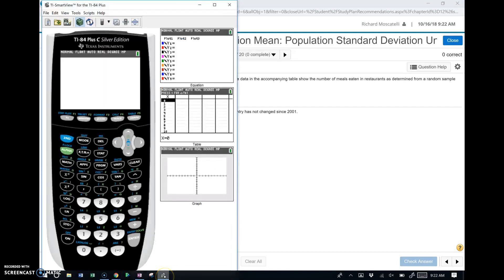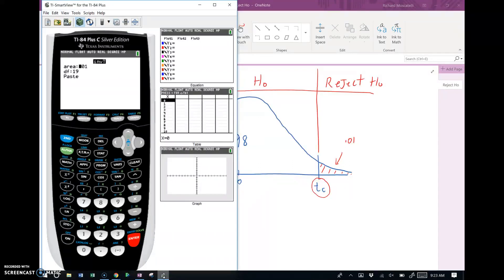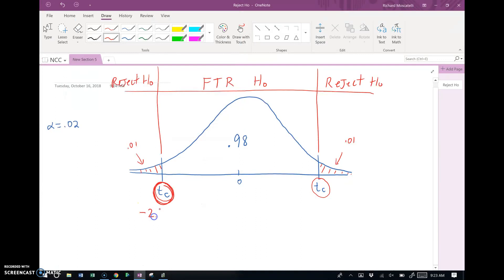Another way, we could use our TI graphing calculator, and in the distribution menu, it has a function, option 4 here, called InvT. And what InvT needs is it would need the area on the left. So say we were looking for this critical T score. The area to the left of it, as you can see, is 0.01. And so I have that area in there, 0.01. And remember, there were 20 pieces of data in that data set. The degrees of freedom are 19, n minus 1. And there you have it, negative 2.539 would be that critical T score on the left. Negative 2.539. And by common sense, this is positive 2.539. So that would be my critical values.